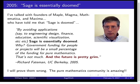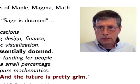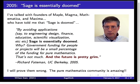Then somebody else found out about SAGE — a computer science professor at Berkeley, a very intense open source person. He's also one of the main reasons Maxima is open source, so he's actually a very important contributor to open source math software. Here's what he wrote: 'By avoiding applications to engineering, design, finance, education, and scientific visualization, Sage is essentially doomed. Government funding for pure math projects will be a small percentage of available funding. The future is pretty grim.'